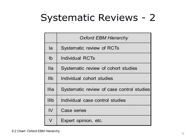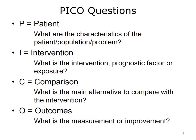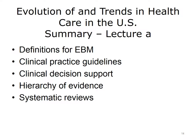When clinicians and researchers seek evidence for clinical practice, they often ask questions with respect to the medical literature in a format described as PICO — P-I-C-O — where P stands for patient, I for intervention, C for comparison, and O for outcomes. The first part is about the patient: what are the characteristics of the population being studied and the problem at hand? The second part is about intervention: what is the intervention, prognostic factor, or exposure to be considered? The third part is about comparison: what are the main alternatives to be compared with the intervention? And finally, O for outcomes: what is the measurement or improvement suggested by the intervention?